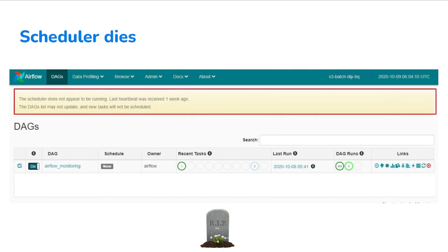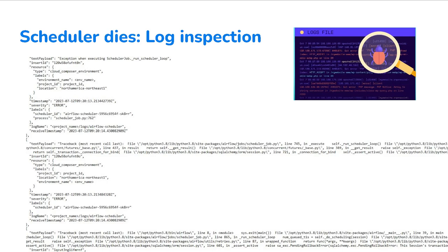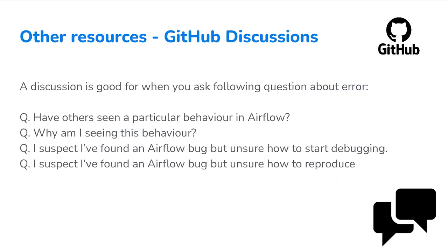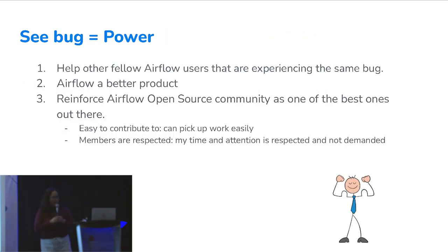If you don't know where to start, the community can always help you get up and running. If something's off and you're unsure whether it's a bug — like our case at Bell Media where our scheduler would die sporadically and we couldn't easily reproduce it — that's a good time to use GitHub Discussions rather than submitting an issue. Seeing a bug gives you potential to make a real impact on the project, and you can reinforce the community as one of the best to contribute to.